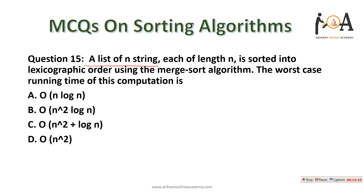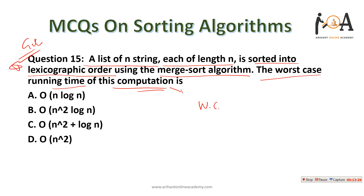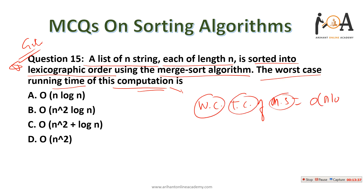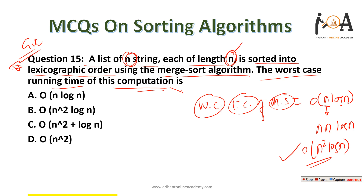The next question — also asked in GATE: a list of n strings each of length n is sorted into lexicographic order using merge sort. What is the worst case running time? Merge sort worst case is O(n log n) where n is the number of elements, but each string comparison takes O(n) time since each string has length n. So the total is O(n × n log n) = O(n² log n). Option B — n² log n — is the correct answer.